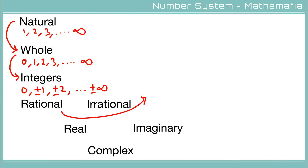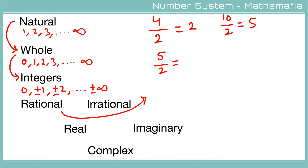Let's talk about rational numbers. If there are four chocolates and two kids, each gets two. If ten chocolates and two kids, each gets five. But if there are five chocolates and two kids, each gets 2.5 — and 2.5 is not in the integers list. Also, if there are ten chocolates and three kids, each gets 3.33333... and so on.